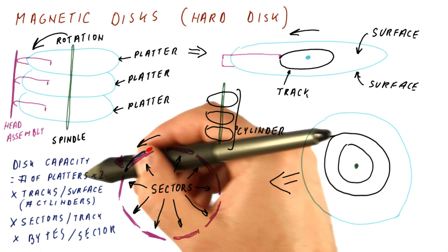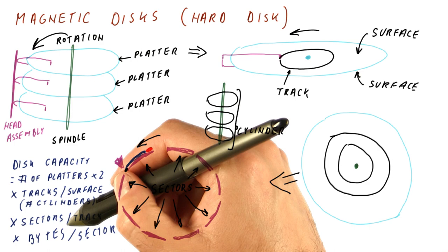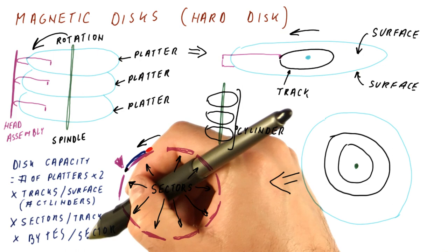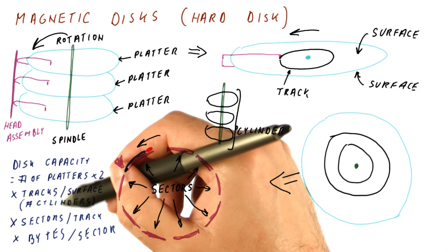Usually we have a small number of platters, such as one, two, three, maybe four. We have thousands of tracks per surface, tens to hundreds sectors per track, and something like a kilobyte or maybe half a kilobyte of bytes per sector. So sectors are usually like kilobytes in size. We have about a hundred sectors per track, maybe a little bit more, and we have thousands of tracks per surface.